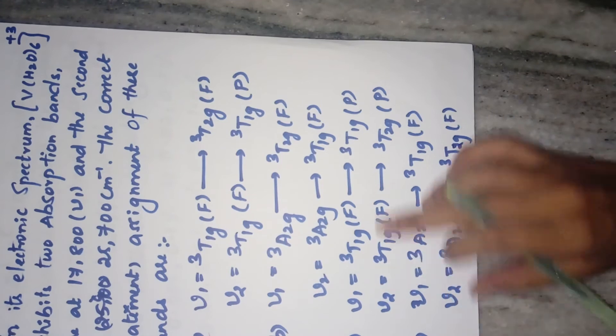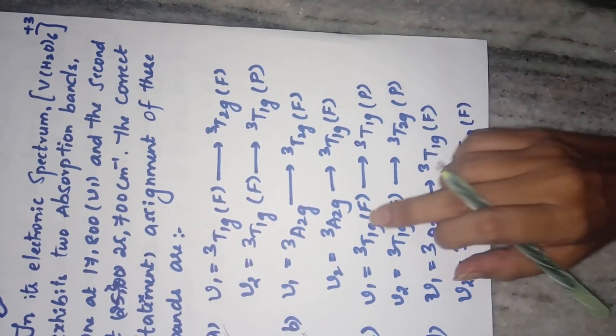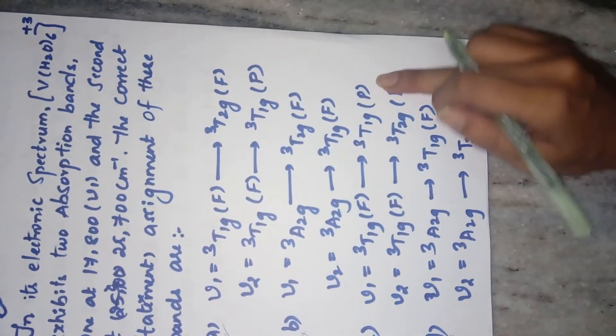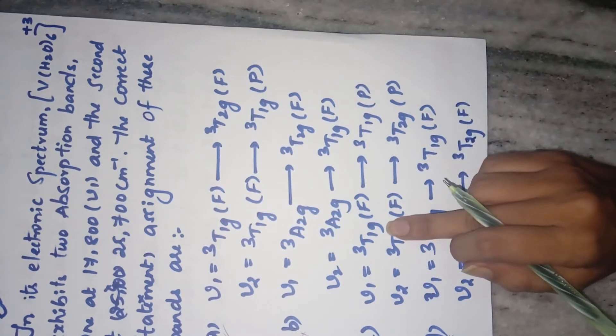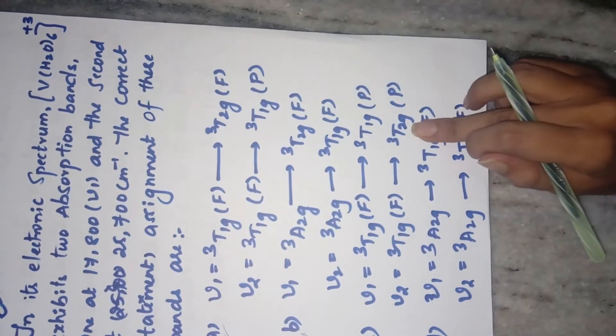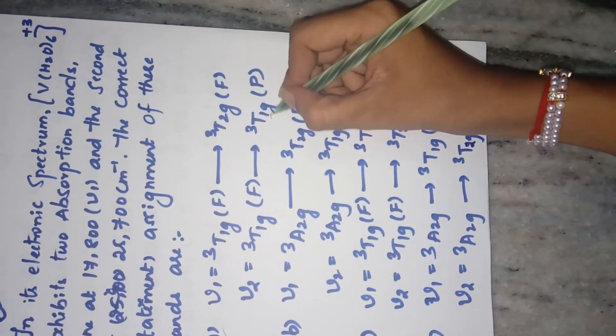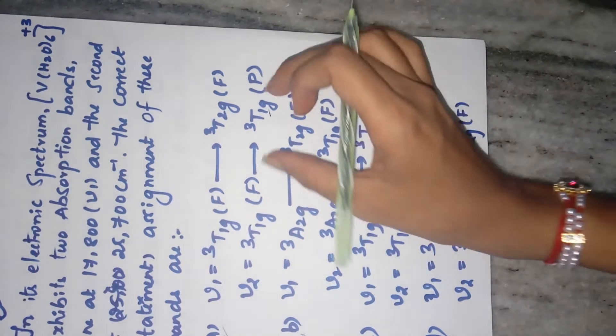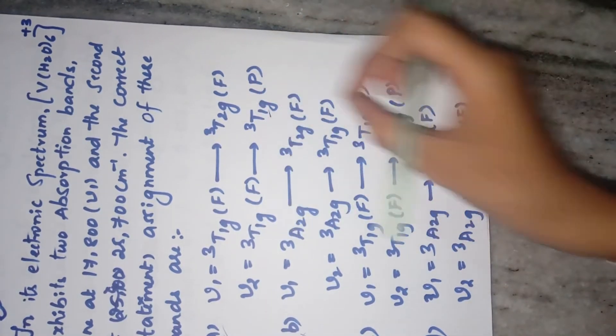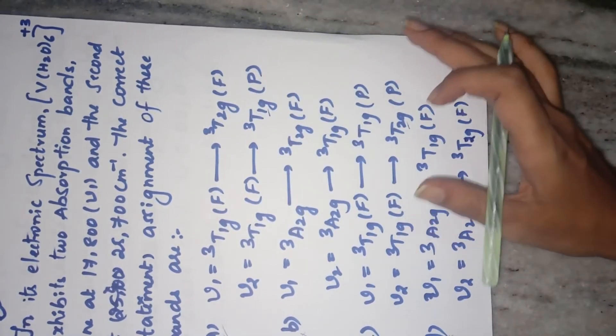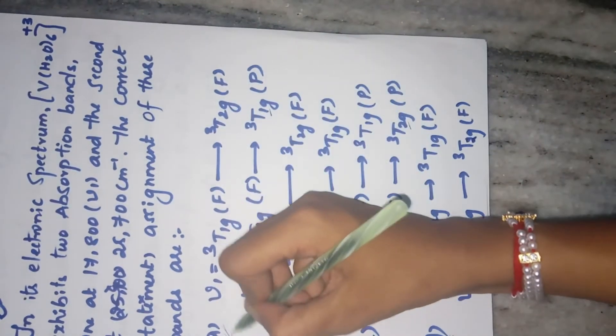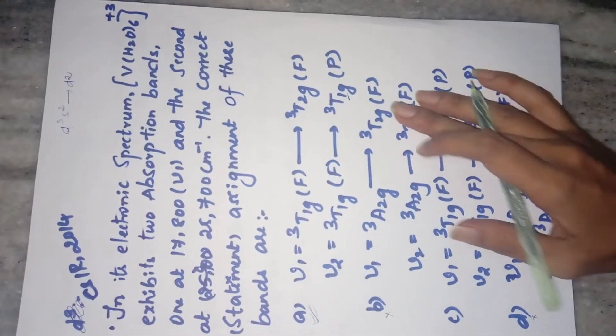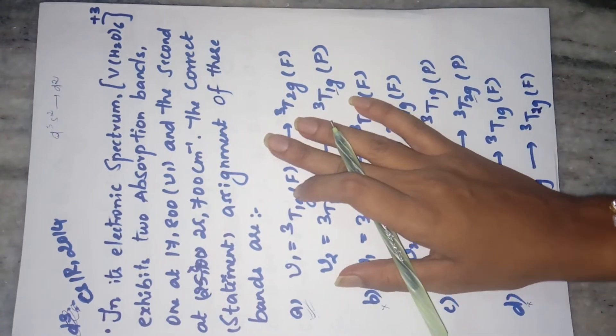So why not C? See, you can look here that the first thing is same, nu one transition is same, but nu two transition here T1 G is given and here T2 G is given. Just there is a difference of one and two over here. You should concentrate if it is a one or two. So easily you can tell that your option A is your right answer. Such a simple way to score marks in CSIR.